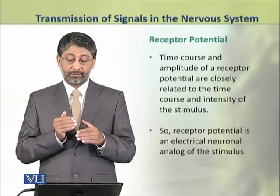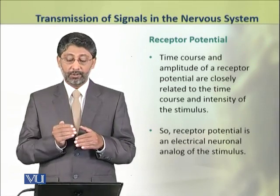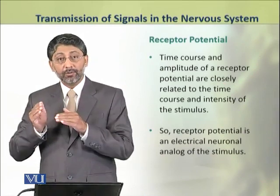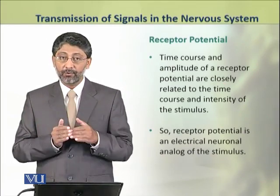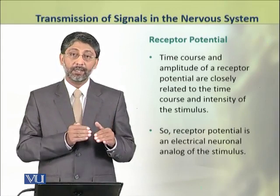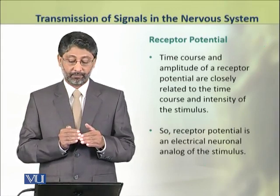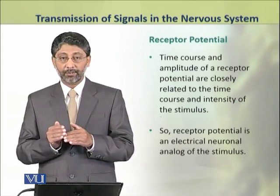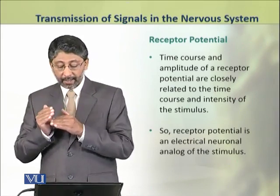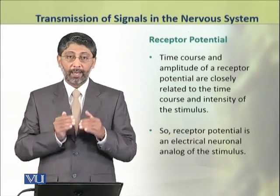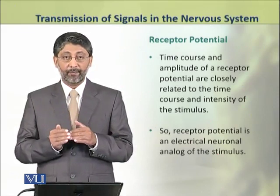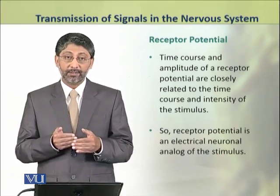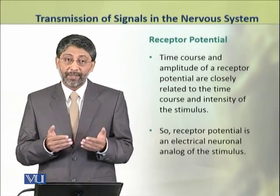The time course and amplitude of a receptor potential are closely related to the time course and intensity of the stimulus. So the receptor potential is an electrical neuronal analog of the stimulus — it is essentially an electric copy of the stimulus.